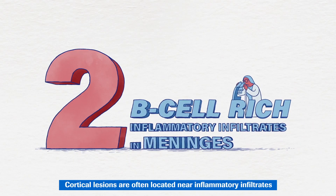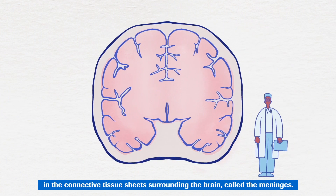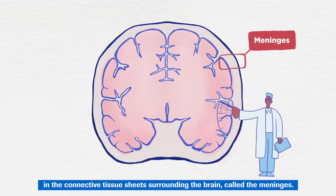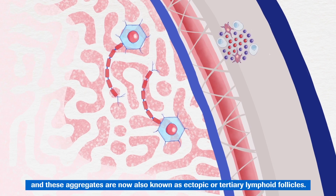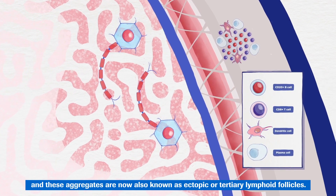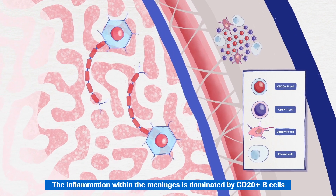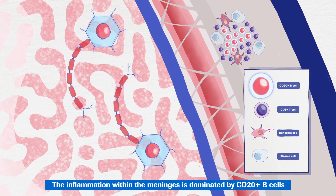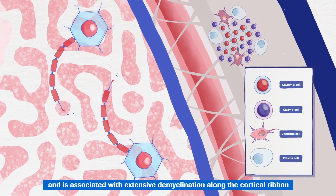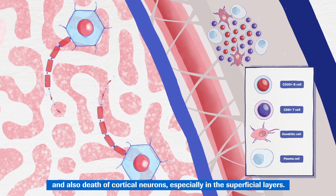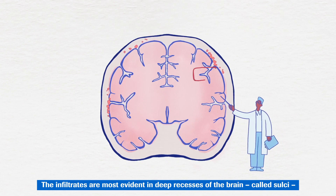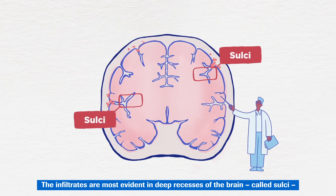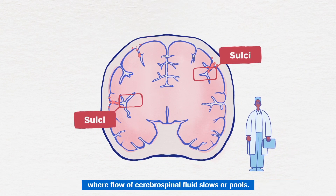Cortical lesions are often located near inflammatory infiltrates in the connective tissue sheets surrounding the brain, called the meninges. Immune cells may accumulate in the meninges, and these aggregates are now also known as ectopic or tertiary lymphoid follicles. The inflammation within the meninges is dominated by CD20-positive B cells and is associated with extensive demyelination along the cortical ribbon and death of cortical neurons, especially in the superficial layers. The infiltrates are most evident in deep recesses of the brain, called sulci.